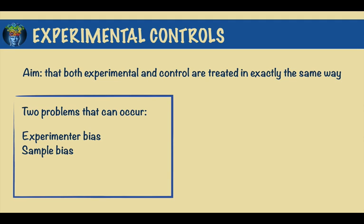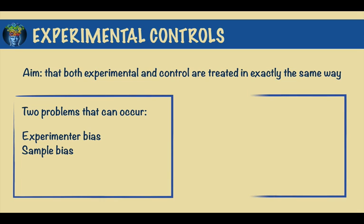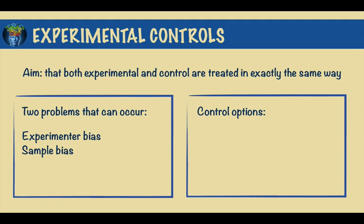Experimenter bias occurs when the experimenter's expectation of the outcome actually influences the outcome. Sample bias, on the other hand, occurs when participants are not representative of the population. But several control options are available.